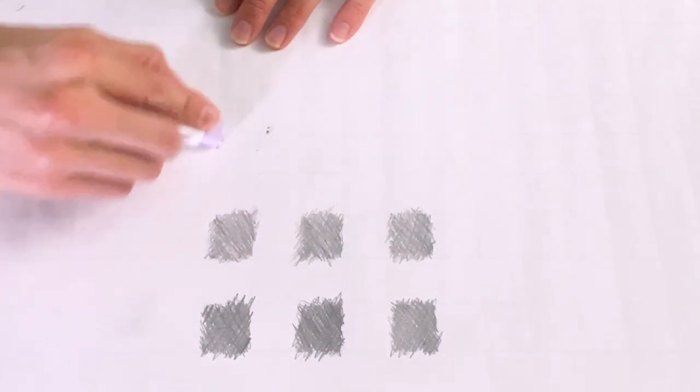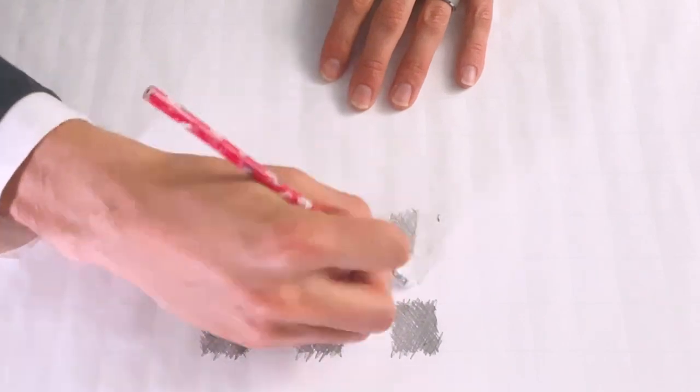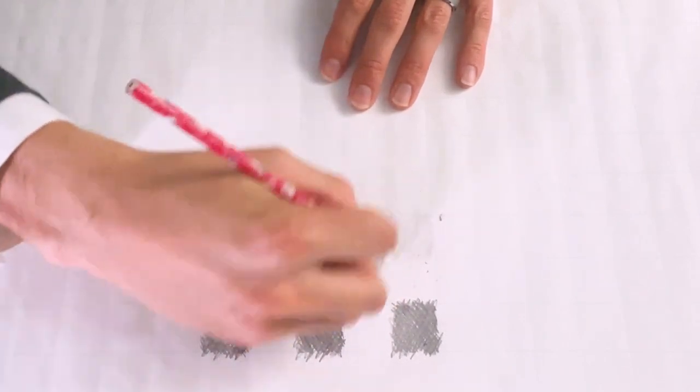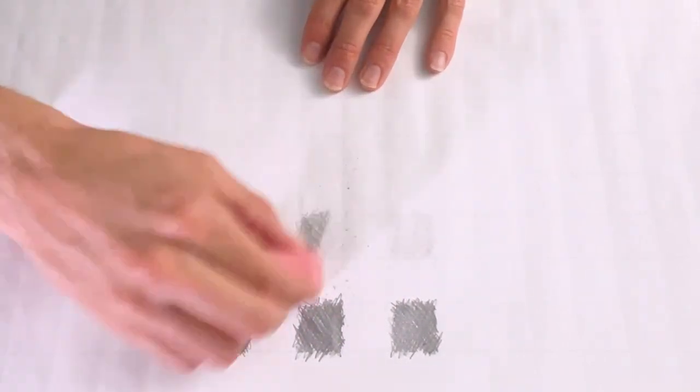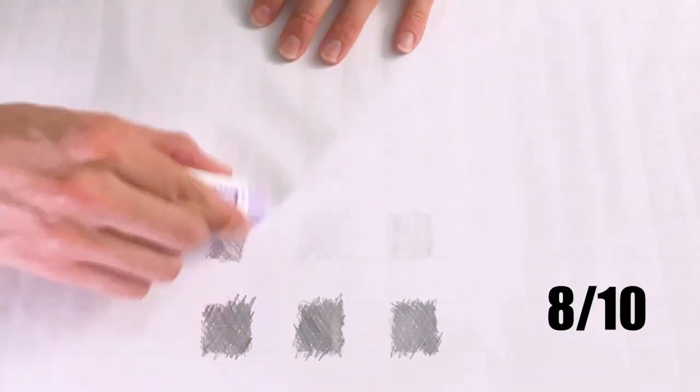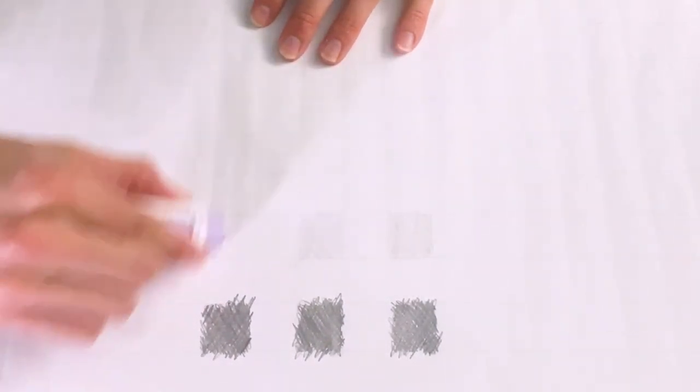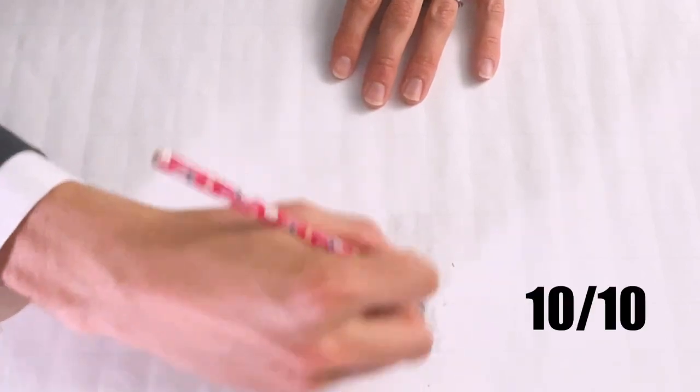But how would they do with the last two darker scribbles? I kept erasing and erasing. The first eraser did okay, eight out of ten. The second did better, nine out of ten. Again, the magic eraser did fantastic. Ten out of ten.